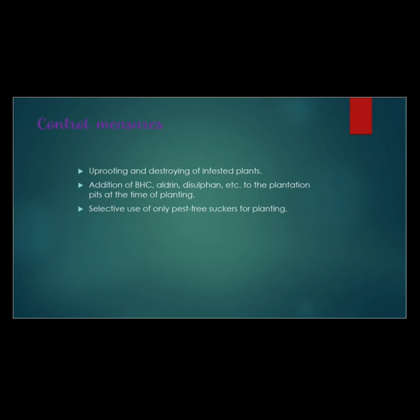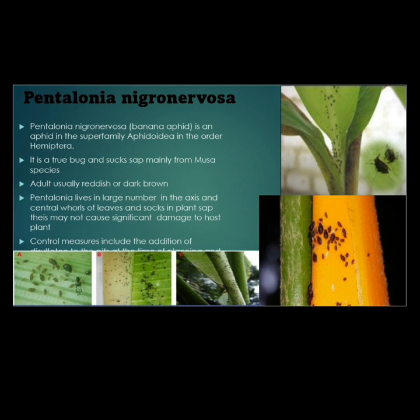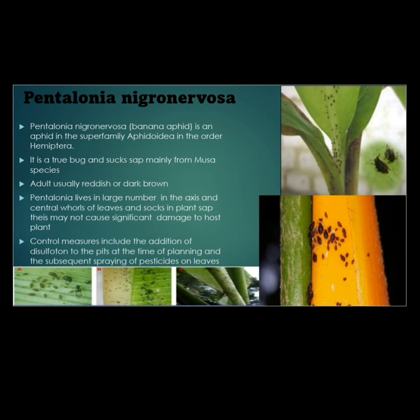Pentalonia nigronervosa is an aphid belonging to the superfamily Aphidoidea in the order Hemiptera. This is a true bug, mainly extracting sap from most species. The adult is usually reddish or dark brown. Pentalonia lives in large numbers in the axons and central walls of leaves and sheaths, sucking plant sap.